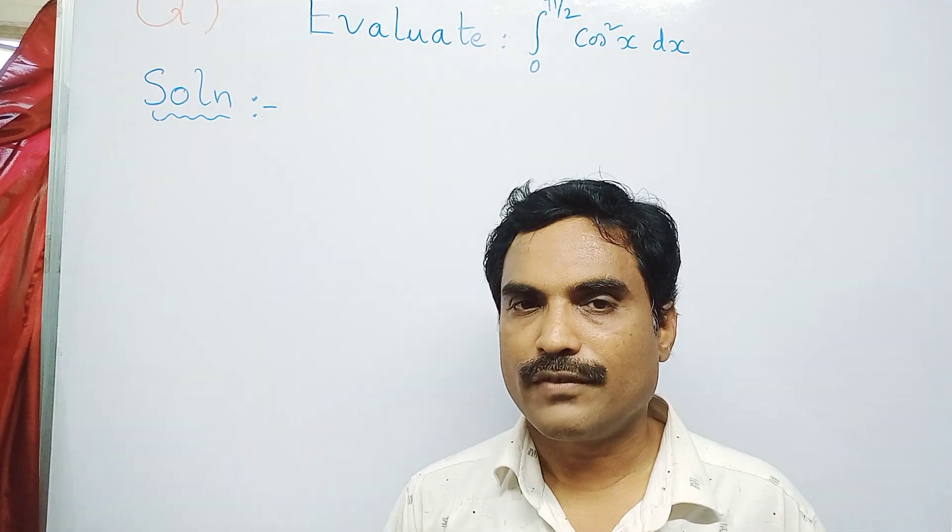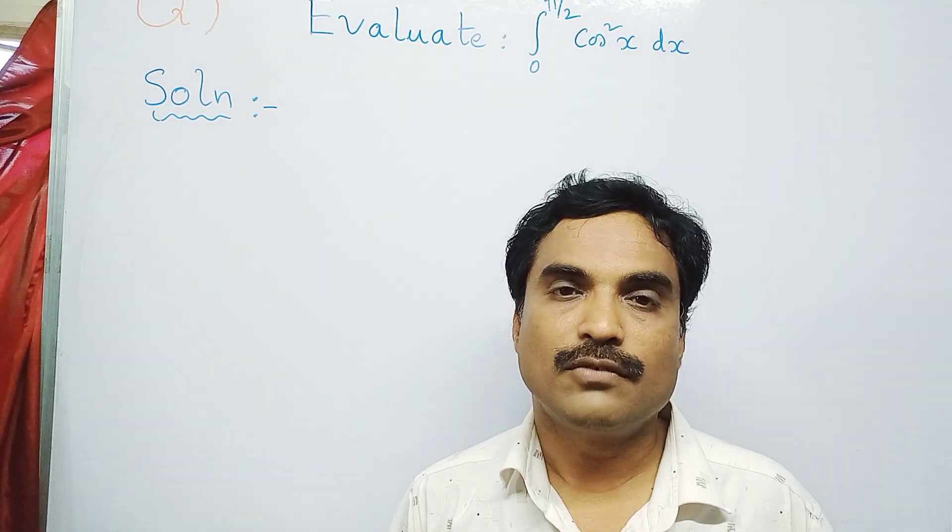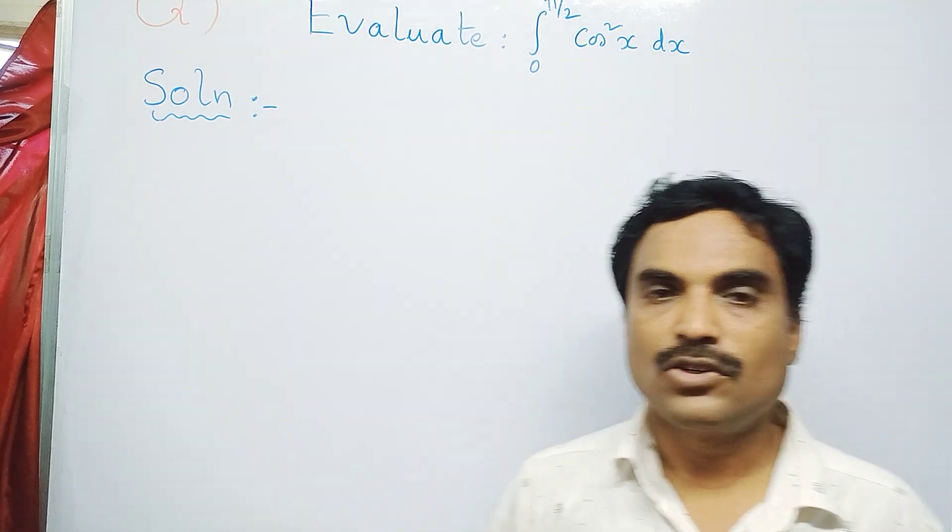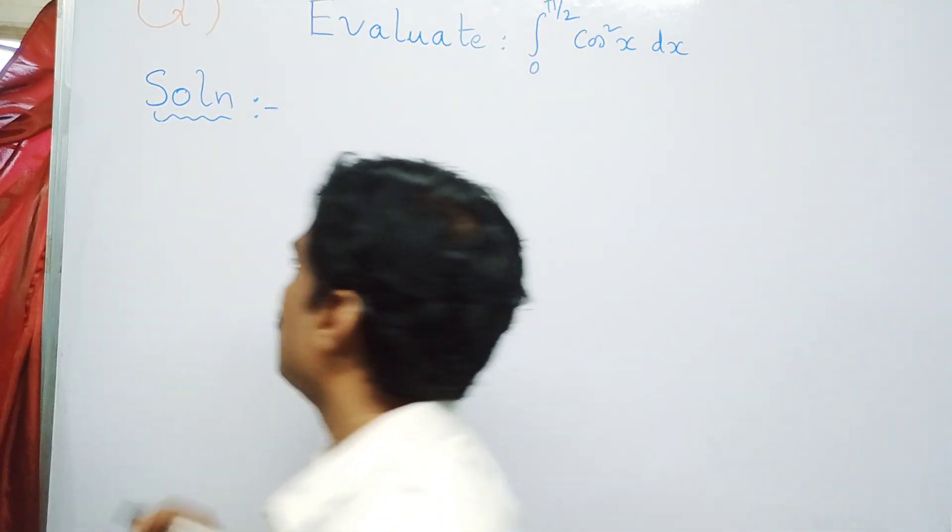Cos²x can be written as (1 + cos2x)/2, and then you have to apply the limits to get the final solution. So first, write what is given here.